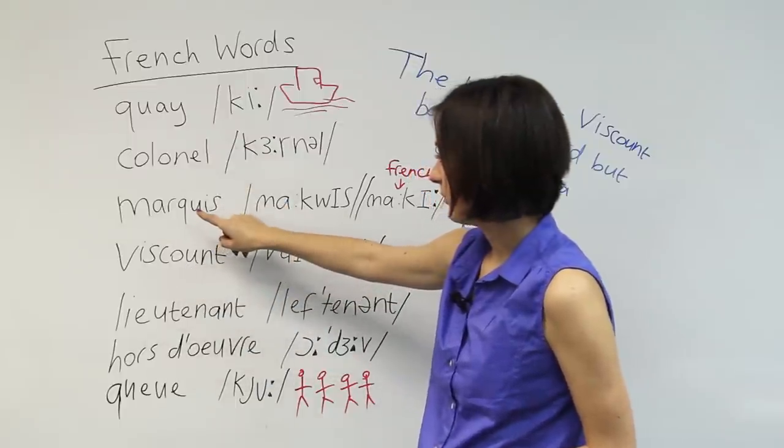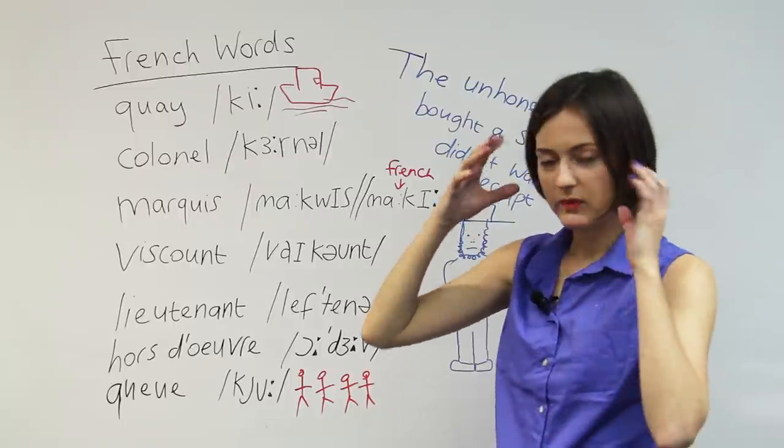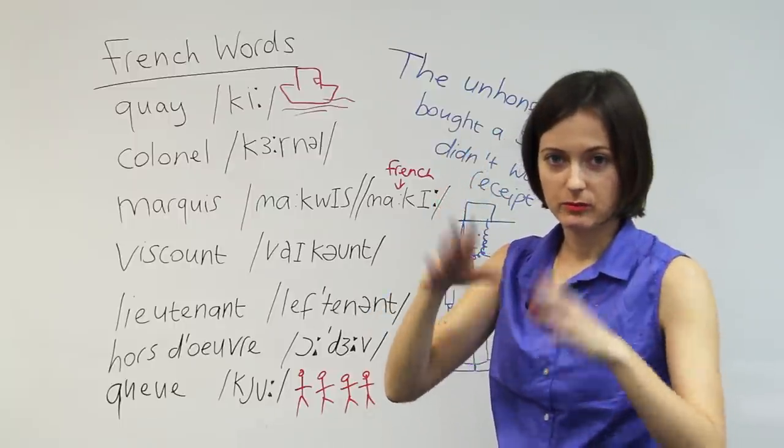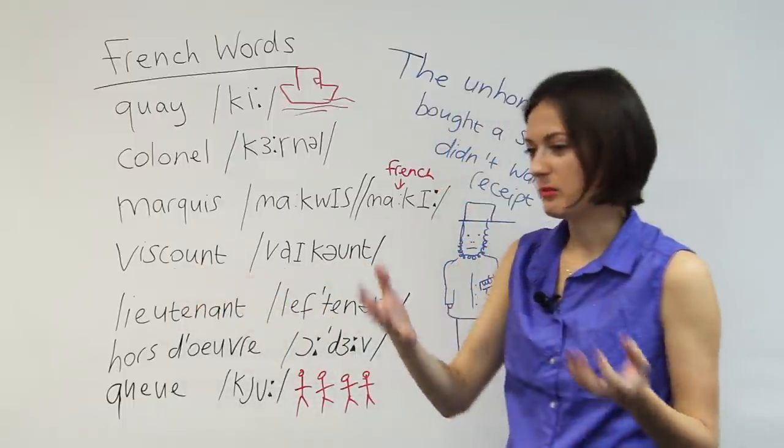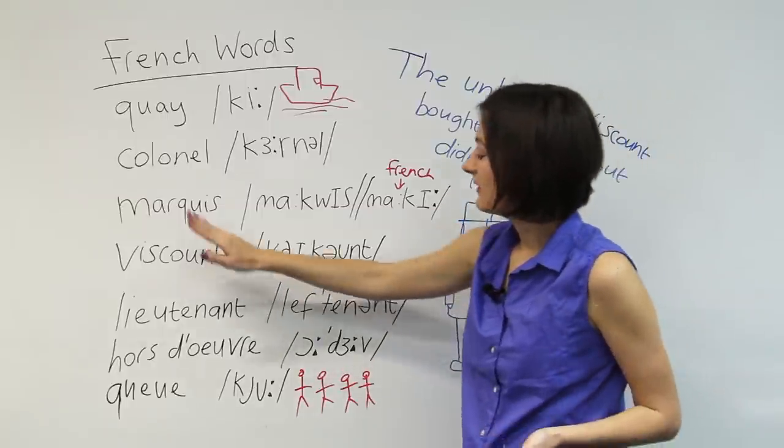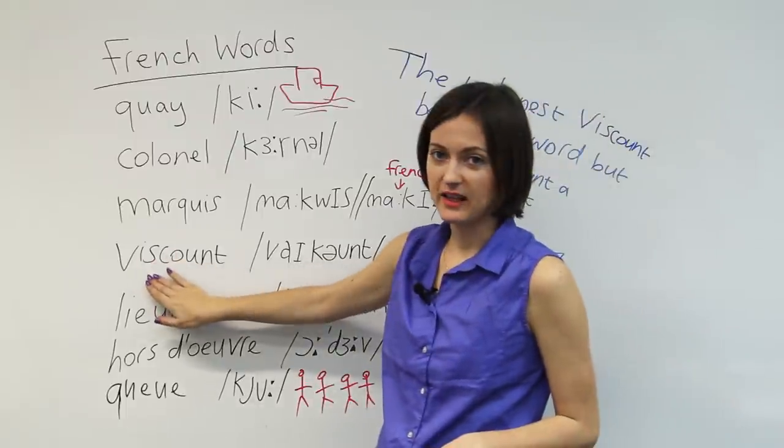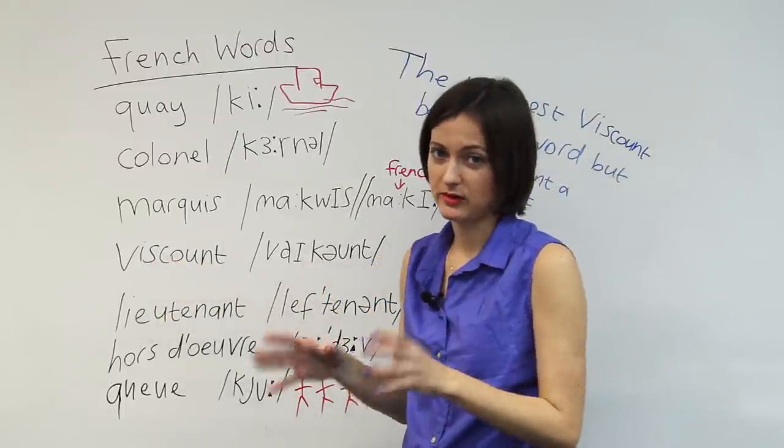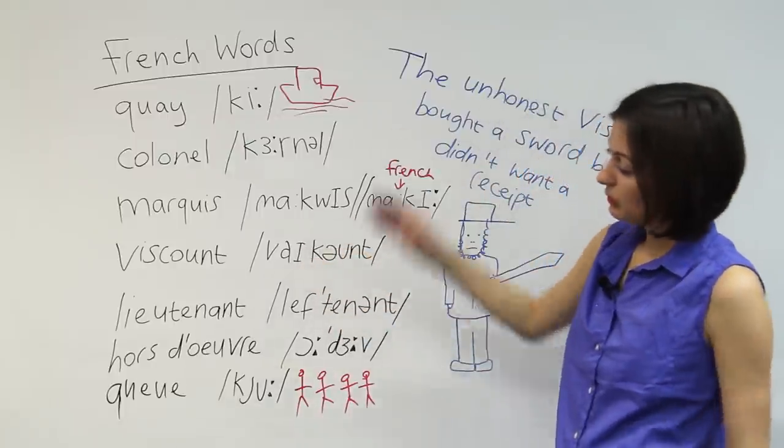Moving on. Viscount, and I should say this word as well, marquis, they are titles that aristocracy have. Viscount somebody, there's a man who did something. We say viscount even though it's viscount here. So we don't say viscount. That's wrong. It's AI, viscount.